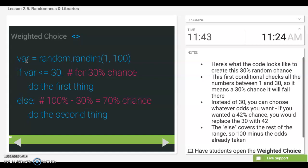So here's what the code would look like. We have a random number from 1 to 100 being selected and being stored in a variable called var. So if var is less than or equal to 30, we're going to do the first thing, whatever we want it to do. Else, we're going to do the second thing, which is 31 to 100. And this ends up giving us a different weight of choice. The thing that's 70% chance of happening is more likely to happen in this case.